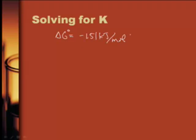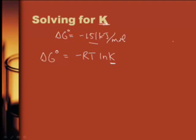One thing we've already talked about in chapter 16 — I want to make sure you can make this connection. We forgot to put this in your handout, so you're going to have to add this. If I want to solve for K, you might remember the equation delta G naught equals negative RT natural log of K. So if I know the value of delta G naught, I can solve for the equilibrium constant K.